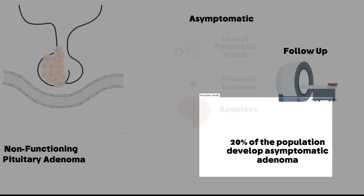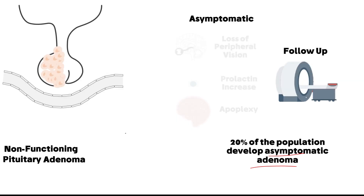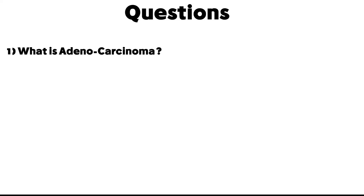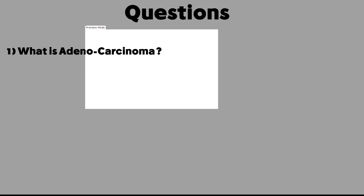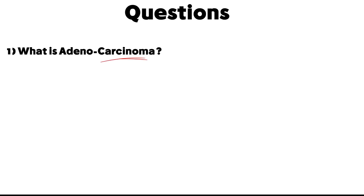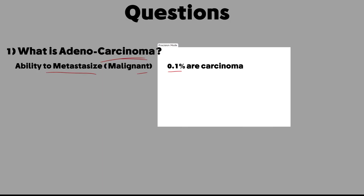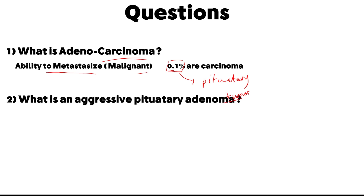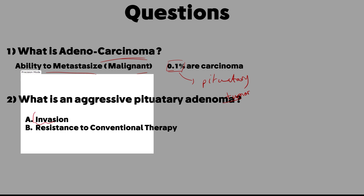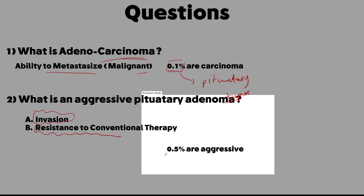Adenocarcinoma is the malignant form of adenoma — it has the ability to metastasize and constitutes around 0.1 percent of all pituitary tumors, making it very rare. An aggressive pituitary adenoma has the ability to invade nearby tissue, shows resistance to conventional therapy, and constitutes around 0.5 percent of all pituitary tumors.